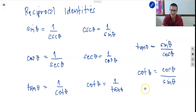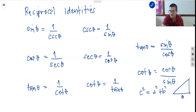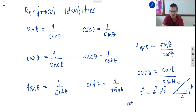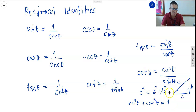We also have the Pythagorean theorem. If you remember, c squared equals a squared plus b squared in a right triangle, where c is the hypotenuse. In trigonometric identities, this gives us sine squared theta plus cosine squared theta is equal to 1.